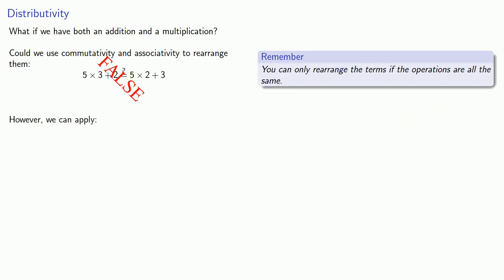However, we can do something which is called the distributive property. For real numbers a, b, and c, a times the quantity b plus c is the same as a times b plus a times c.